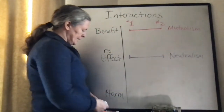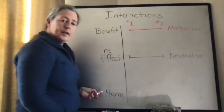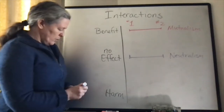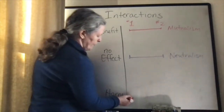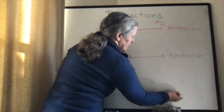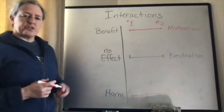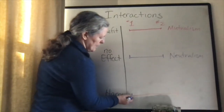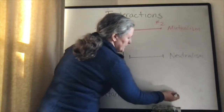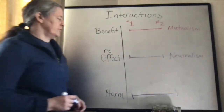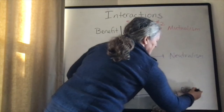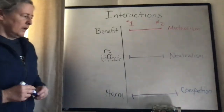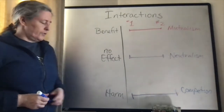Sometimes organisms can harm each other when they interact in the same environment. For example, if we have two different types of grass competing for space, both take energy and the competition between those two can be harmful to both species. So competition usually takes energy, and that is harmful to both.